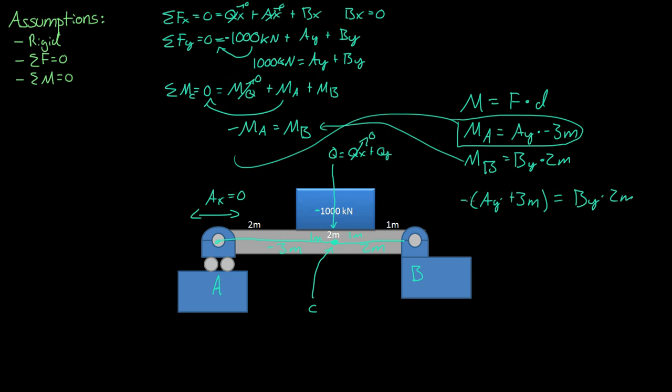we get negative Ay times negative 3 meters equals By times 2 meters. These negatives cancel out, so Ay times 3 meters equals By times 2 meters. If we divide both sides by 2 meters, we get Ay times 1.5 equals By.